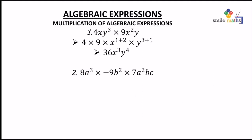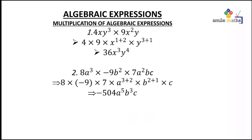Second example: 8a³ times negative 9b² times 7a²bc. We multiply the whole numbers: 8 times negative 9 times 7. Then we have a to the power 3 plus 2, b to the power 2 plus 1, and c. The number gives us negative 504, then we have a⁵, b³, and c.